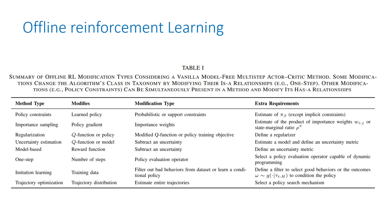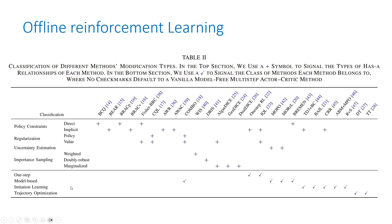Here's a summary of the categories for offline RL approaches. Policy constraint is one of the most successful approaches. Importance sampling modifies the policy gradient but was not very successful. Regularization modifies the Q function or policy and has been successful. Uncertainty estimation has been largely unsuccessful. Model-based has been effective for certain cases, one-step has been effective, and trajectory optimization uses transformer technology which is interesting but perhaps not fully explored.